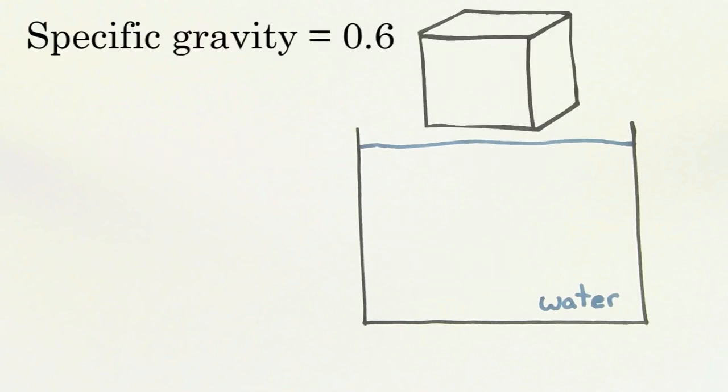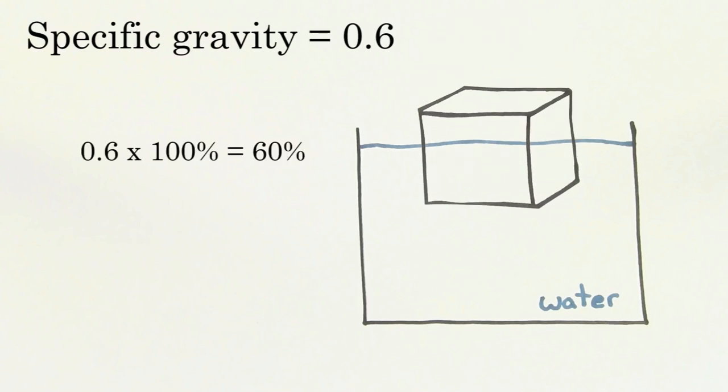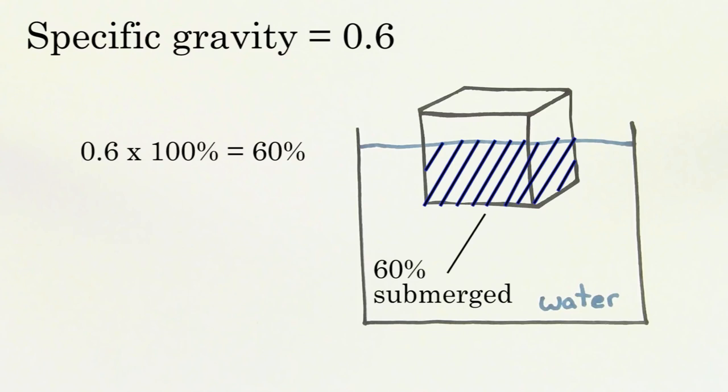If the cube of wood had a specific gravity of 0.6, 60% of the wood would be submerged beneath the water's surface.